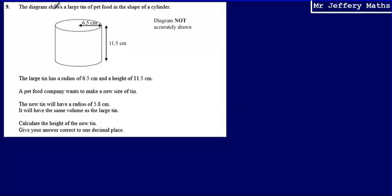This is question nine. The diagram shows a large tin of pet food in the shape of a cylinder. The large tin has a radius of 6.5 cm and a height of 11.5 cm. A pet food company wants to make a new size of tin, and the new tin will have a radius of 5.8 cm. The new tin needs to have the same volume as the old tin, and we're asked to calculate the height of the new tin.